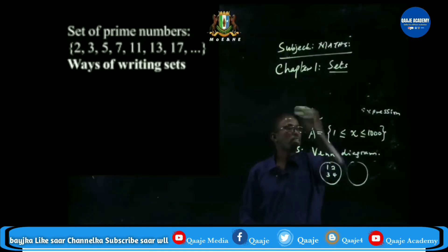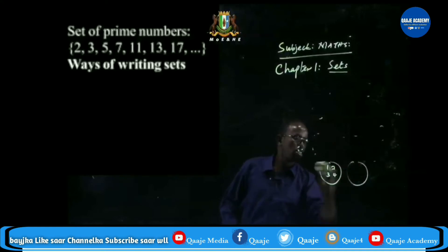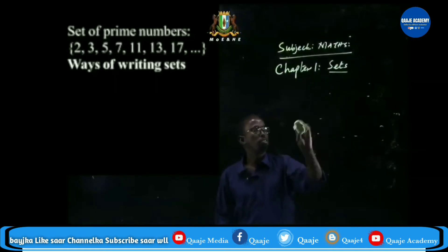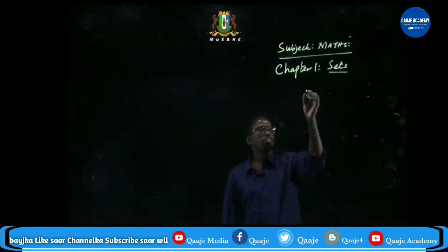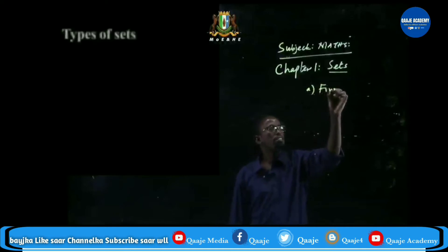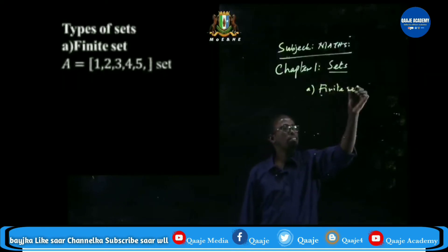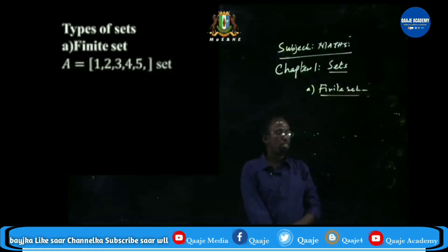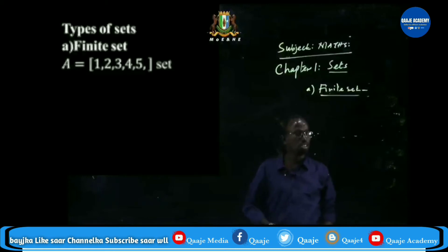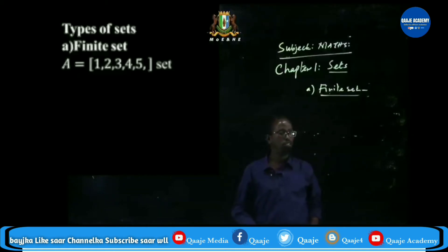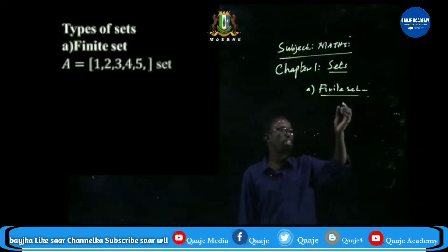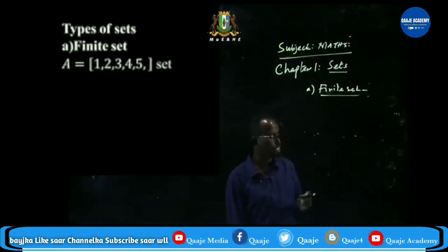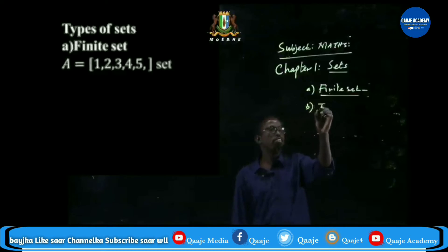Types of sets. There are three main types of sets. First, we have the finite set. A finite set contains a limited number of elements — finite means you can count the number of elements in the set.